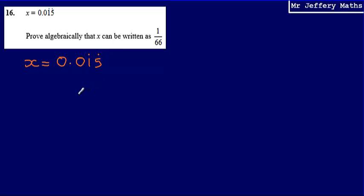Now, the first thing to note is that those two dots on top of the numbers 1 and 5 simply mean that this is representative of a recurring decimal. So what it means is 0.01515151515 and so on, continuing on.